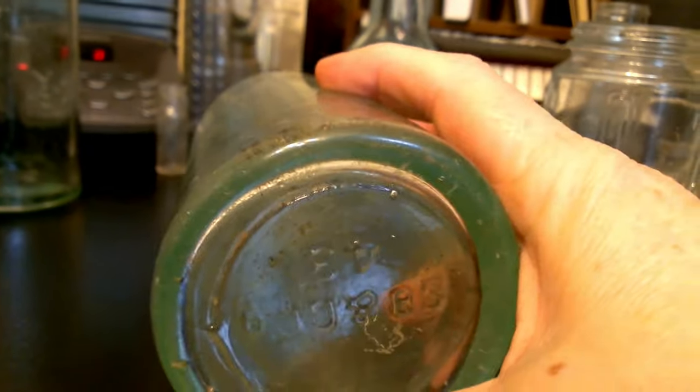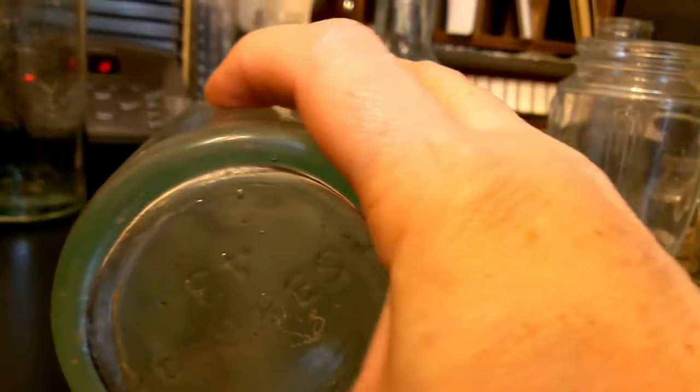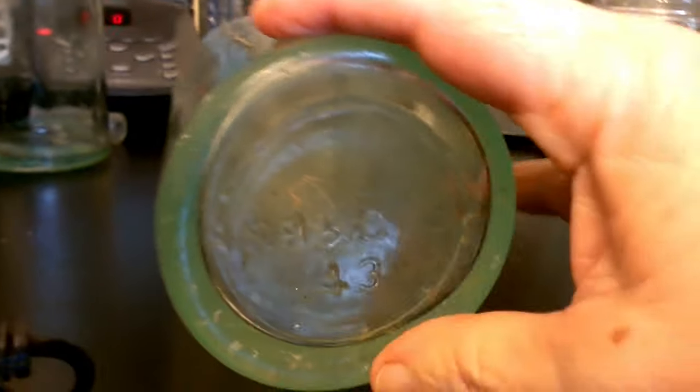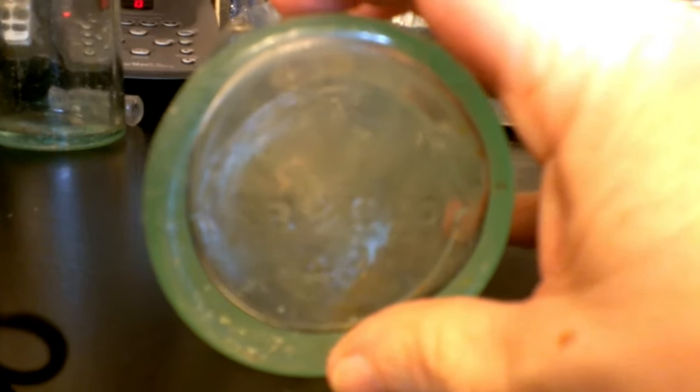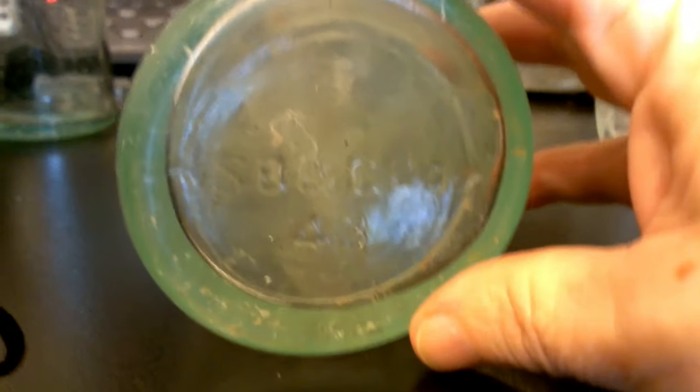And it does have markings on it. If I can get her turned on the right way. I always love that. It says S B and G Co. Number 43.